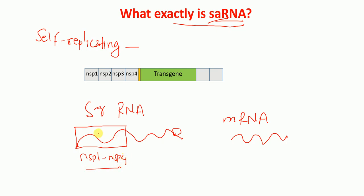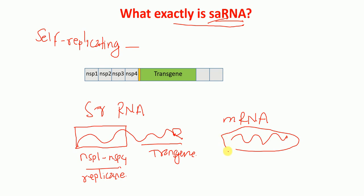These are sequences from alpha viruses that form the replicase — the replication machinery — and this replication machinery actually helps in the replication of our transgene, our gene of interest. In messenger RNA, we just have our coding sequence, 5' and 3' UTRs. We don't have any non-structural proteins from the viruses.